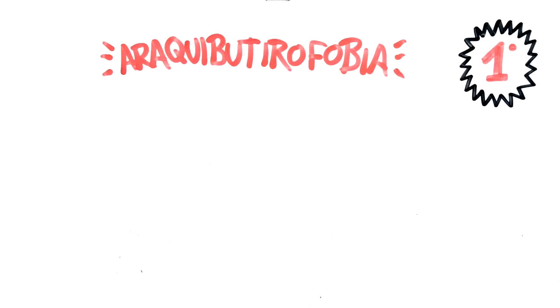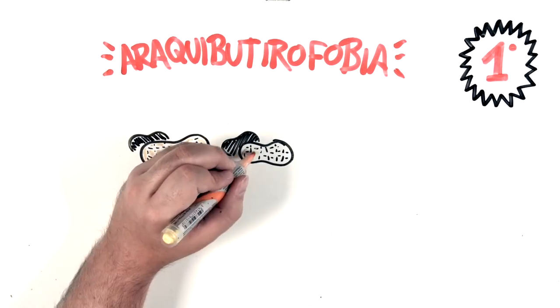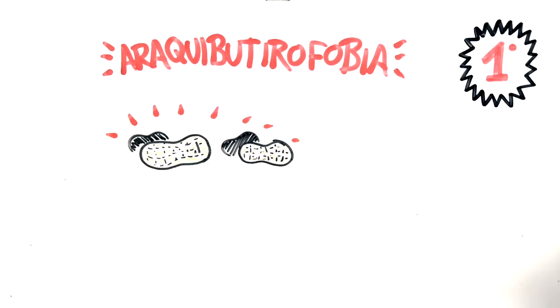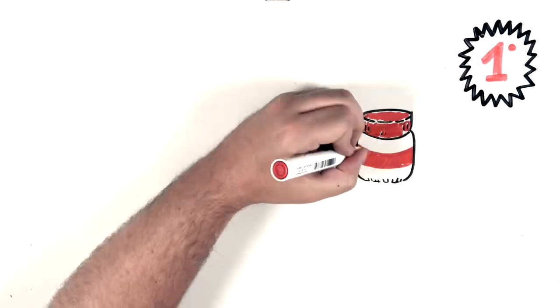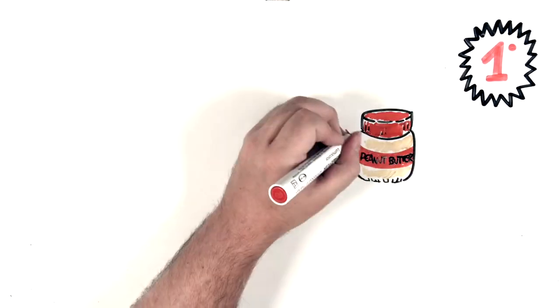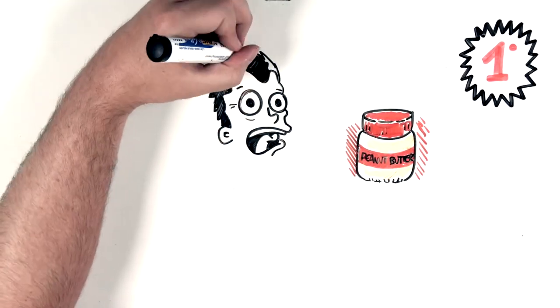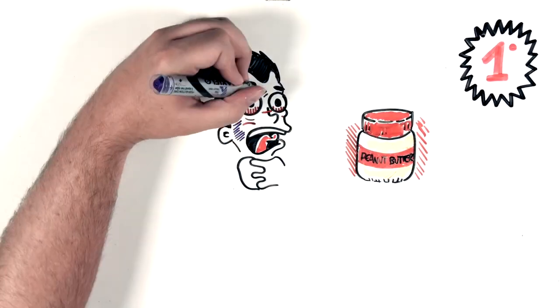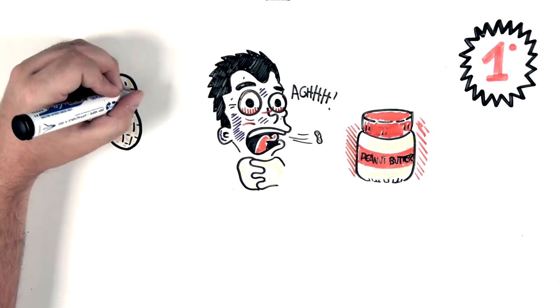And finally we come to the rarest phobia that we've found. Very weird and funny. It is arachibutyrophobia. Phobia caused by peanuts. Although it is not only fear of peanuts, but also their skin and eating peanut butter. This paste is sticky and thick, so it is easy to get stuck in your mouth.